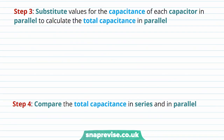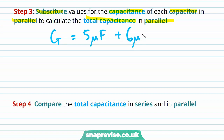Step 3: substitute values for the capacitance of each capacitor in parallel to calculate the total capacitance in parallel. So the total capacitance is equal to 5 µF plus 6 µF, which is equal to 11 µF.